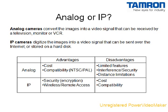Next, you will have to decide how your camera should transmit image data. Most security cameras in the world today are analog cameras. Analog cameras convert the images into a video signal that can be received by a television, monitor, or VCR. Analog cameras are popular because they are inexpensive and also because they use standardized video signal formats that are compatible with almost all analog recording systems and monitors.